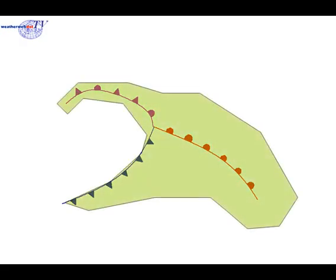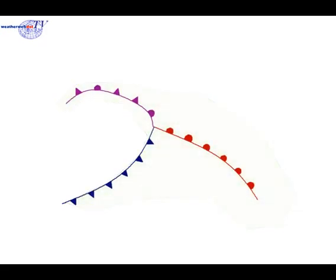Rain surrounds the frontal system like this. Notice how close to the rear edge of the cold front the rain is. Ahead of the cold front is a warm front, and in between the two is a zone known as a warm sector. It's this zone, ahead of the cold front, that we're going to look at first.